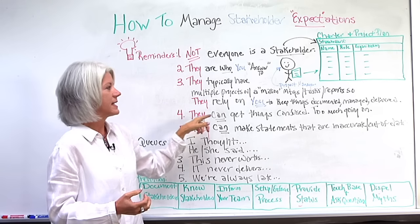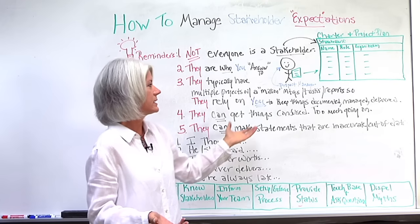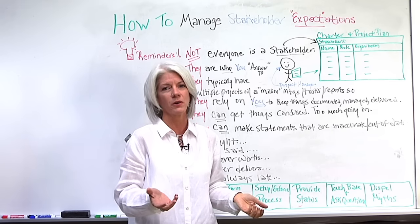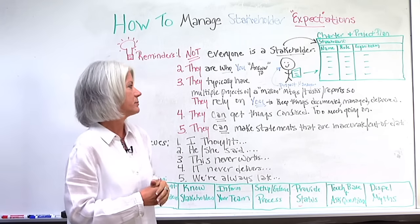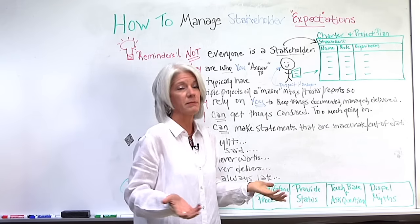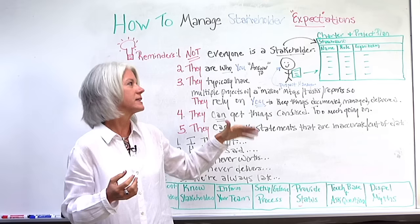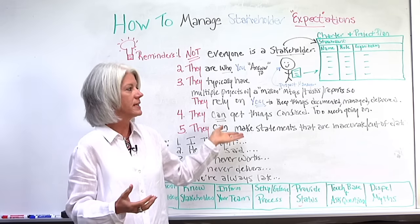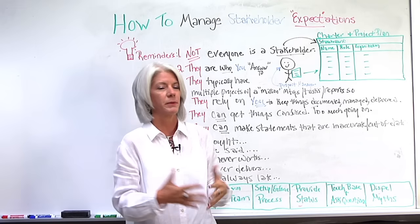Number four: they can get things confused. With all those things going on, it's easy to get things confused — not because they intentionally want to, but they have so much going on that it's hard to keep things in order and on track. That's why they need the project manager. Number five: they can make statements that are inaccurate or out of date — again, not intentionally, but if things continue to change and go through the change control board and decisions cause changes, they may be making statements based on old information if they are not kept up to date.